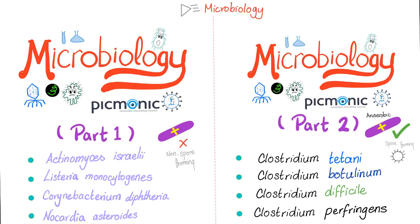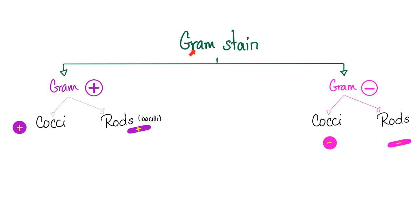Please make sure to watch my previous two microbiology videos. In the first one, we talked about certain bacteria, and in the second one, we talked about others. We divide bacteria based on their gram stain — some stain gram positive, others gram negative. Gram positive bacteria appear purple; gram negative appear pink. Then we divide gram positive into cocci and rods, and the same for gram negative.